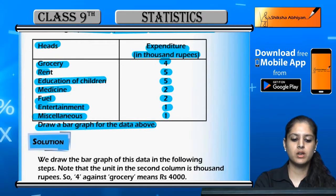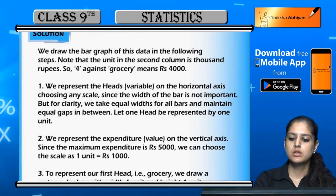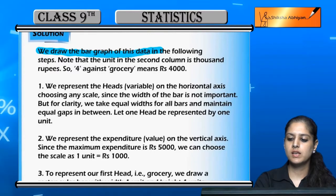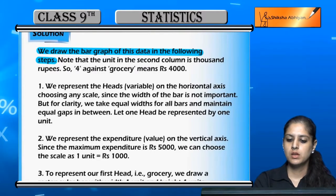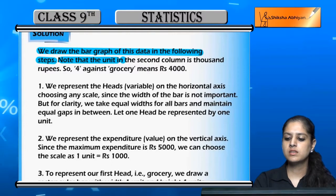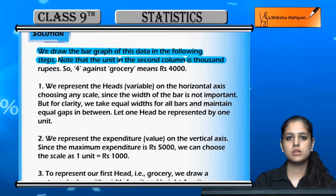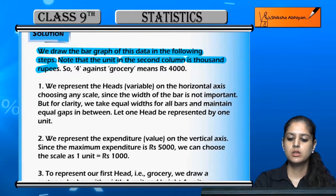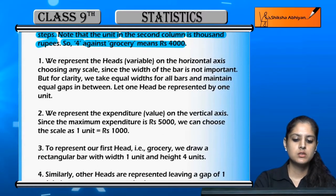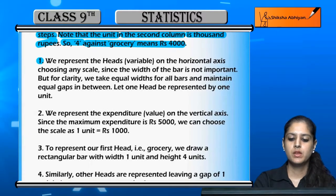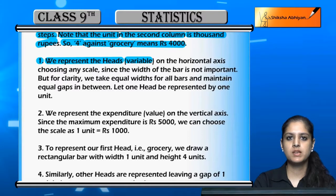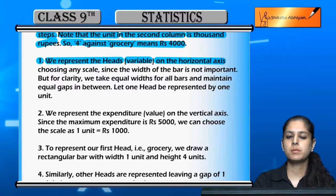Now let us draw the bar graph of this. Note that the unit in the second column is thousands — so four means four thousand rupees. The first step is we represent the heads, which we call variables, and we represent them on the horizontal axis, the x-axis.